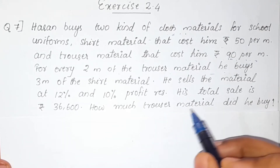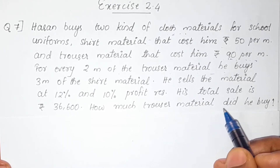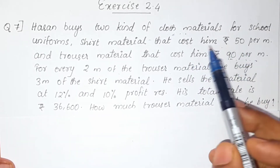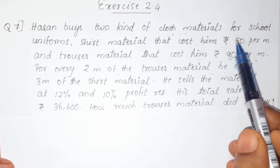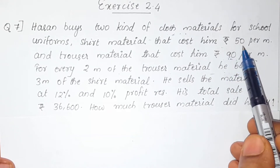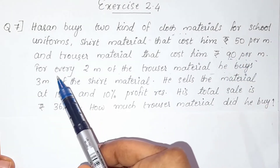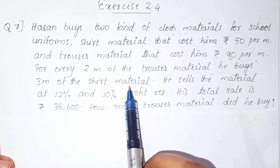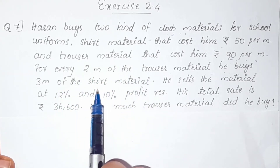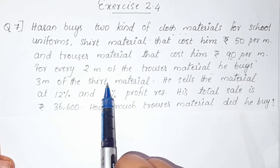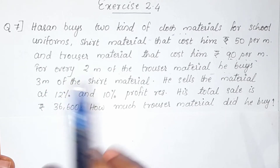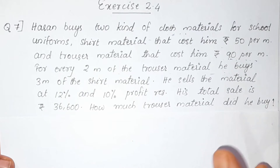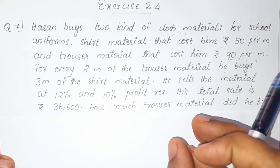The trouser material costs Rs. 90 per meter. For every 2 meters of trouser material, he buys 3 meters of shirt material. So the ratio of trouser to shirt material is 2 : 3.